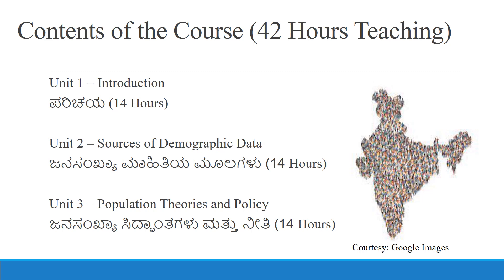We are going to cover this entire course in 43 hours. Unit 3 talks about population theories and policy. For 14 hours you have to learn from this unit, which covers three chapters.